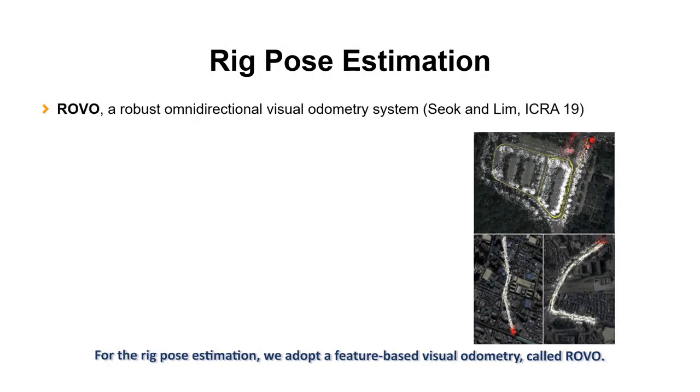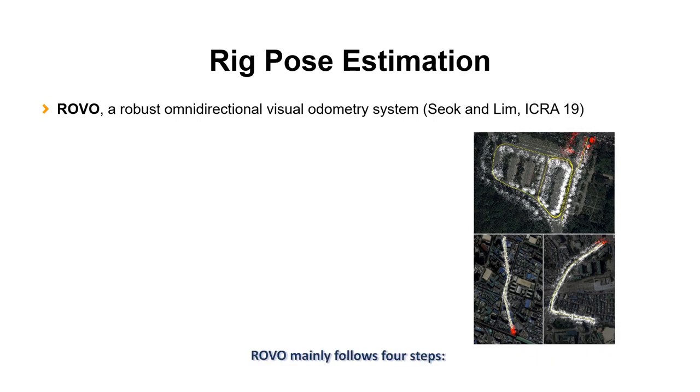For the rig pose estimation, we adopt a feature-based visual odometry called ROVO.